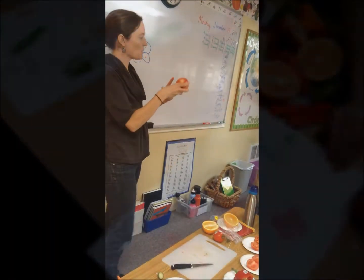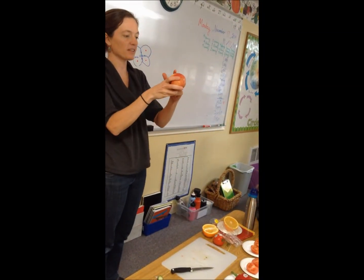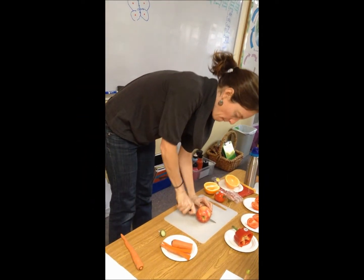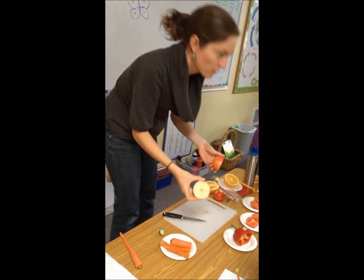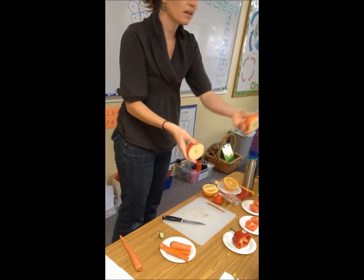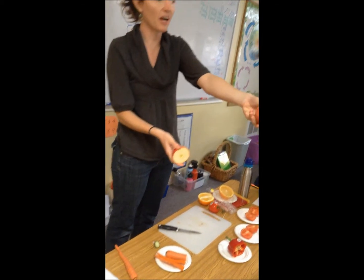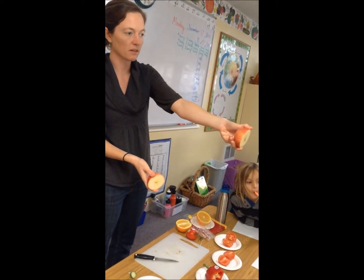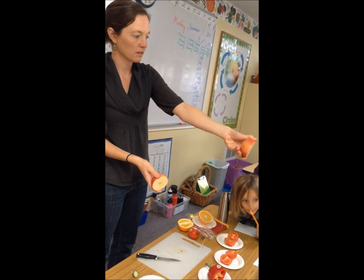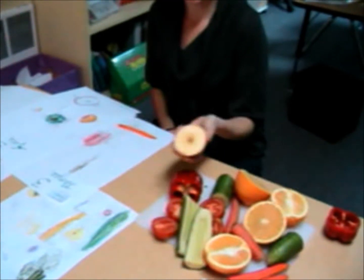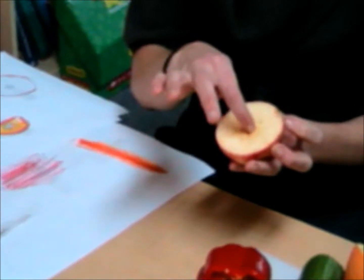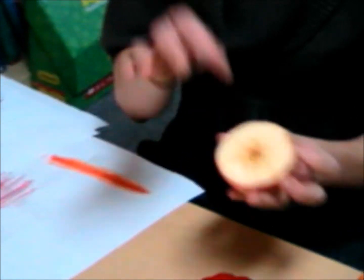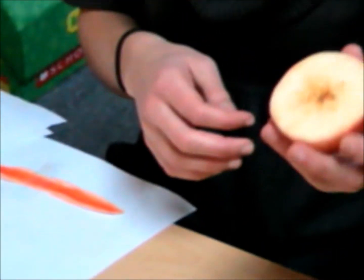What do you predict? How many parts do you think there will be if I cut it? Two. Oh, it's shaped like a star! How many parts are on that star? Five. There's five sections in the center, and every apple has five sections.